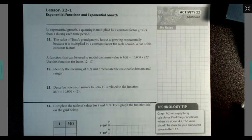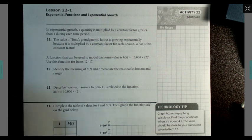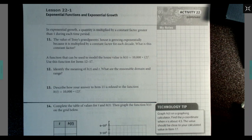In exponential growth, a quantity is multiplied by a constant factor greater than 1 during each time period. The value of Tony's grandparents' house is growing exponentially because it is multiplied by a constant factor for each decade. What is that constant factor?